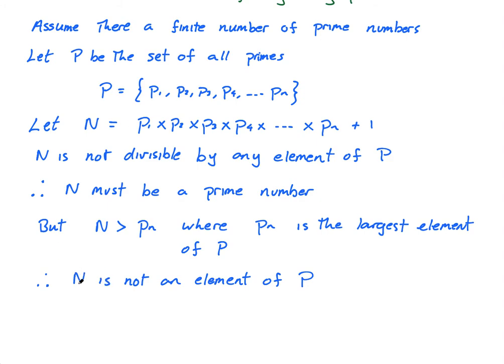So, there's your contradiction. So, we say, this is a contradiction as P, and again, always write this is a contradiction, and why? Because as P is, as P is the set of all primes.